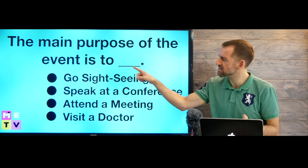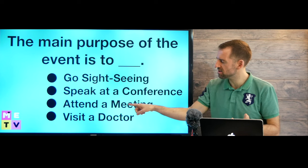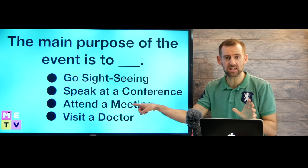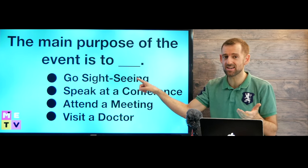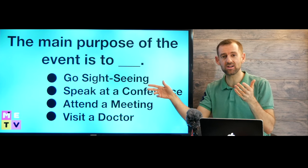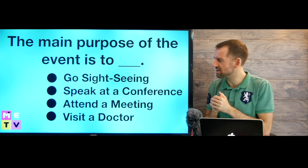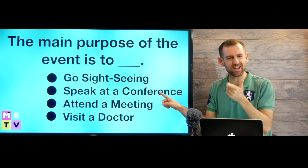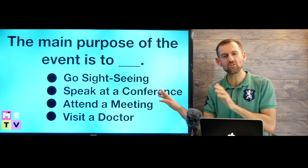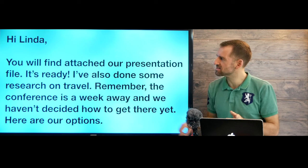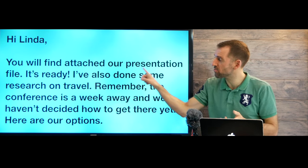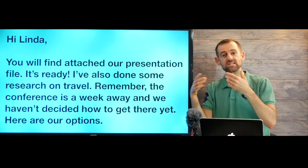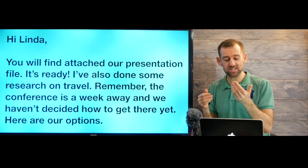So the main purpose of the event is to go sightseeing, speak at a conference, attend a meeting, or visit a doctor. The question says nothing about a doctor. It doesn't say anything about a meeting. So we can eliminate those. We're not going sightseeing, although maybe it talks about that as an option. Having a car would make it easier to go sightseeing. The main purpose of the event is to speak at a conference. How do we know that? Because the beginning of the email said you will find attached our presentation file. It's ready. That means John and Linda are going to be presenting something at the conference. That means they're going to be speaking at the conference.